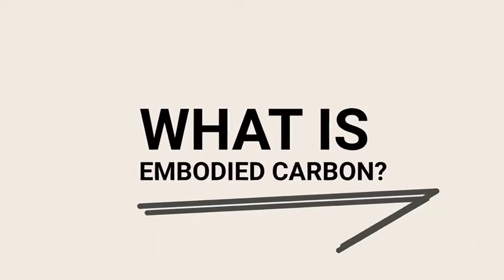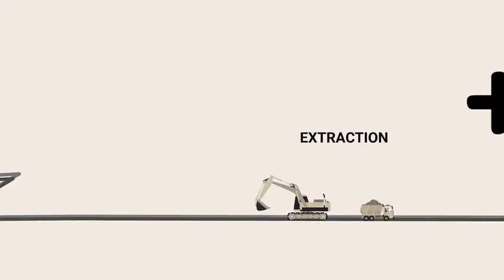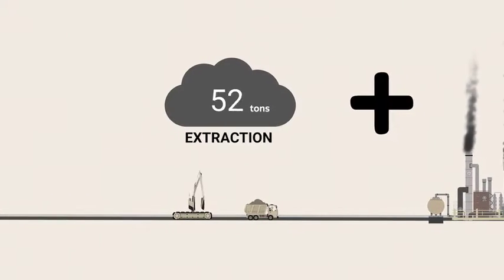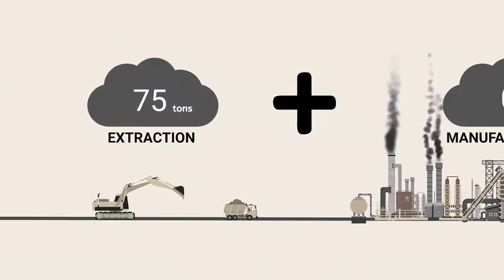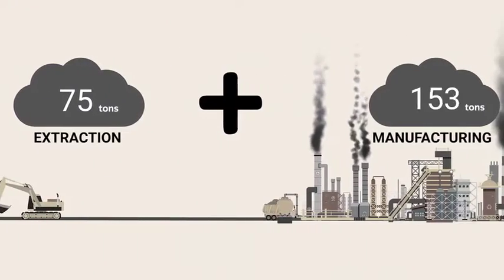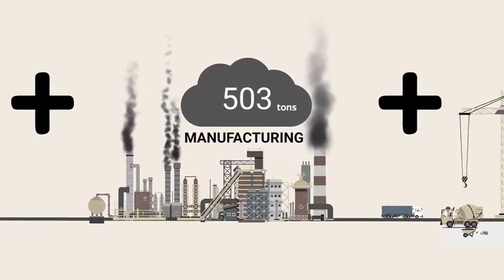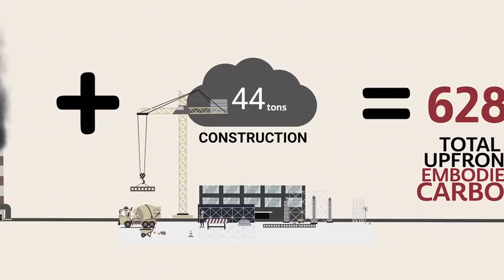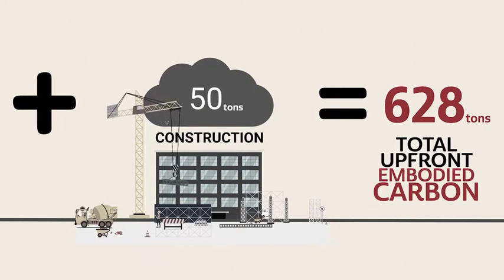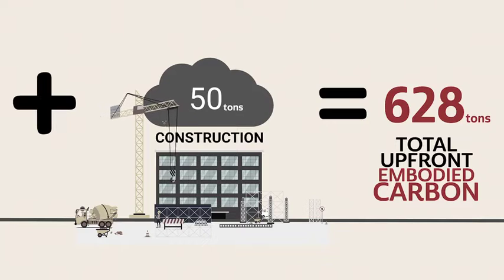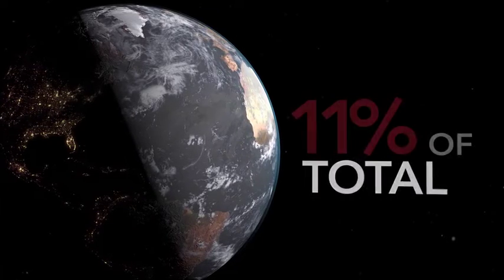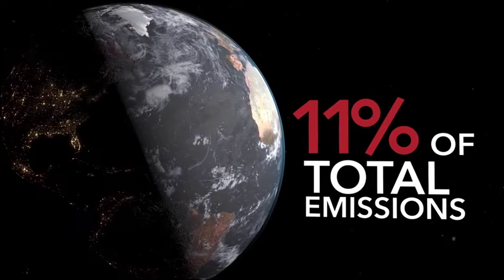So what does embodied carbon mean? Embodied carbon is the emissions footprint that comes from harvesting, transporting, and manufacturing building materials. Each stage in the process of getting a building material to a construction site causes greenhouse gas emissions. And this carbon footprint from materials can be very significant — it's up to 11% of all human-caused emissions on the planet.